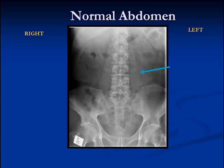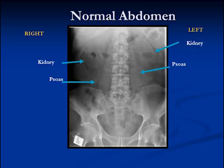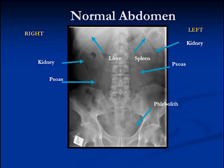The first structure you should always look for is the psoas muscle — there it is on that side, and here on the other side, forming a triangular shape around the lumbar spine. You can sort of see an outline of a bean in the upper quadrant — this is the kidney — and here's the kidney on the other side. There's also a line between white and black over the kidney — this is the edge of the liver. A similar line on the other side shows the edge of the spleen. This little calcified density in the pelvis is a phlebolith, which are little stones that form in veins — they don't mean anything. The soft tissue density within the pelvis is the bladder.